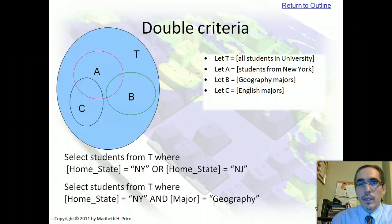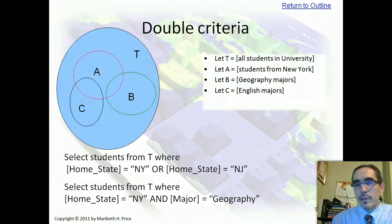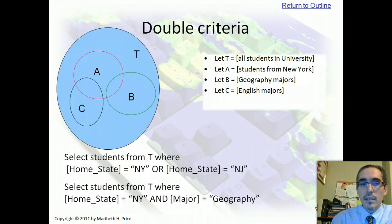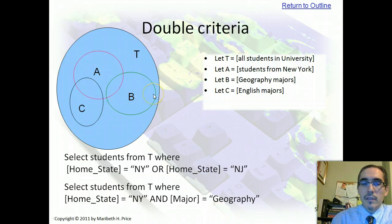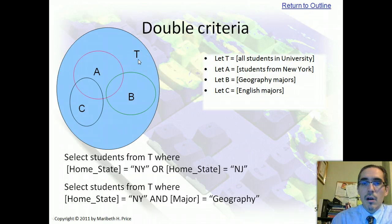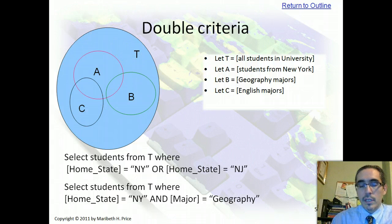One way to think about working with compound queries is to imagine them as sets, working with sets of data. Here we've got what might be familiar to some of you if you think back to geometry or maybe a discrete math class — looking at a Venn diagram, overlapping sets of information or data. In this case, the big circle T represents all students in a university, everybody we're considering at this moment.